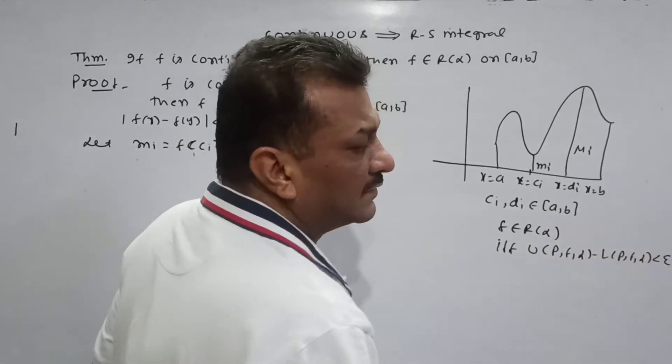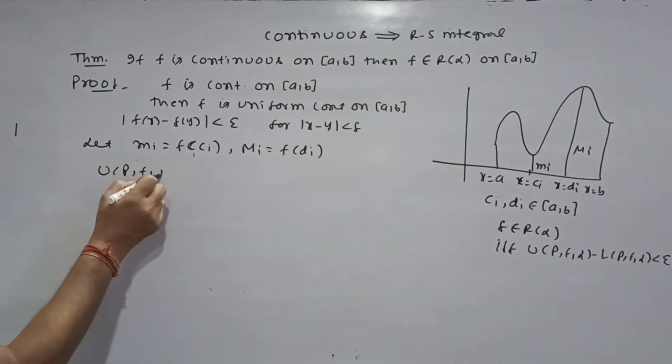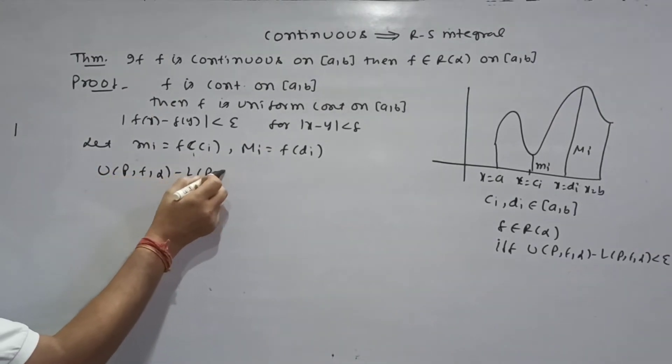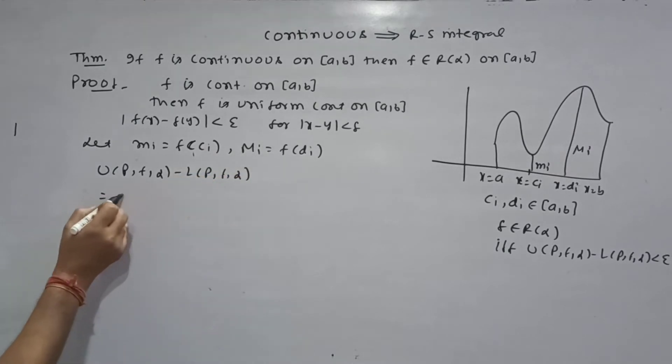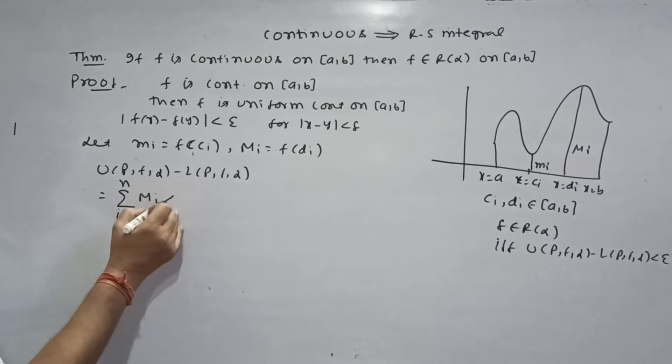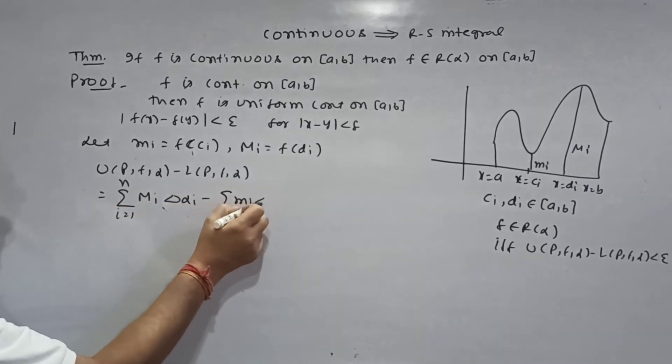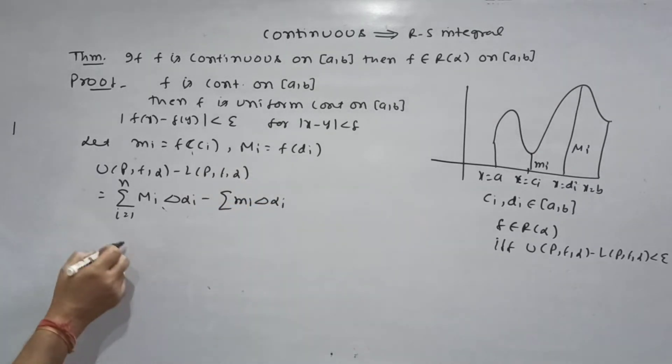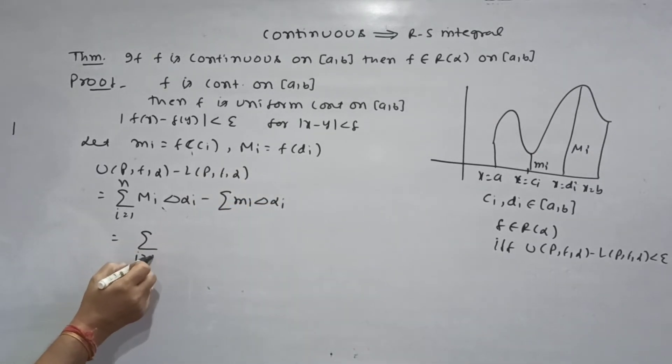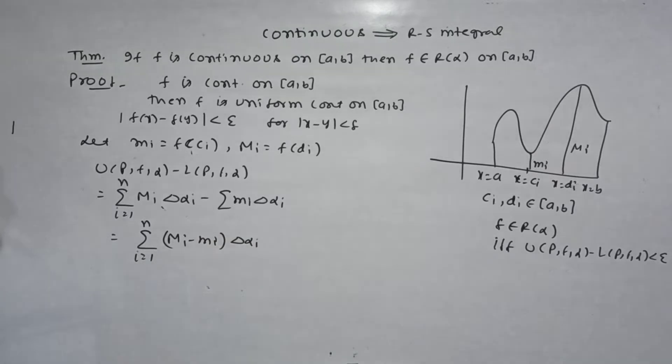If and only if U(P,f,alpha) minus L(P,f,alpha) less than epsilon, then U(P,f,alpha) minus L(P,f,alpha) equals summation i equals 1 to n Mi delta phi minus summation mi delta phi, which equals summation i equals 1 to n (Mi minus mi) delta phi.